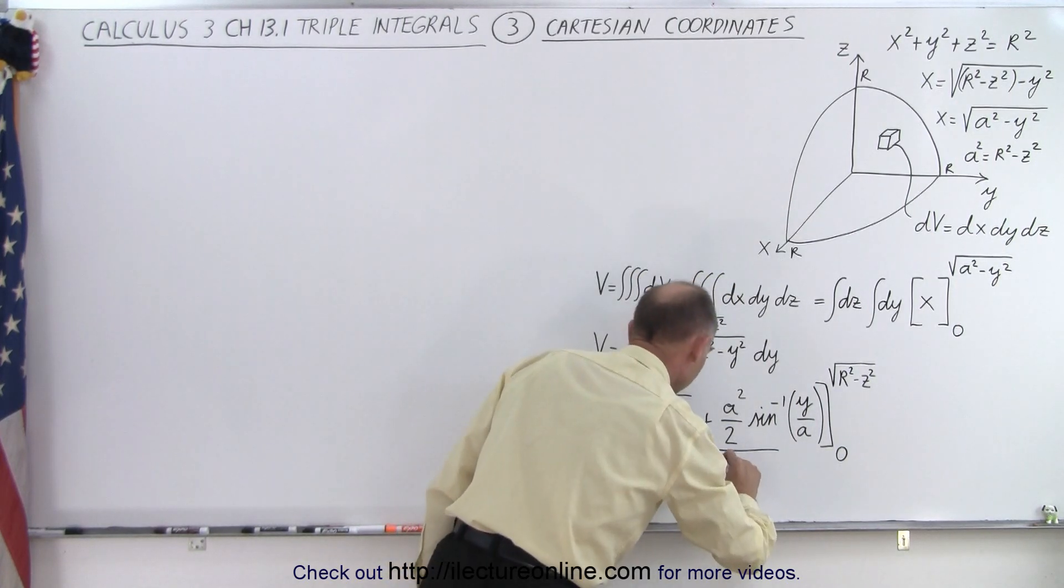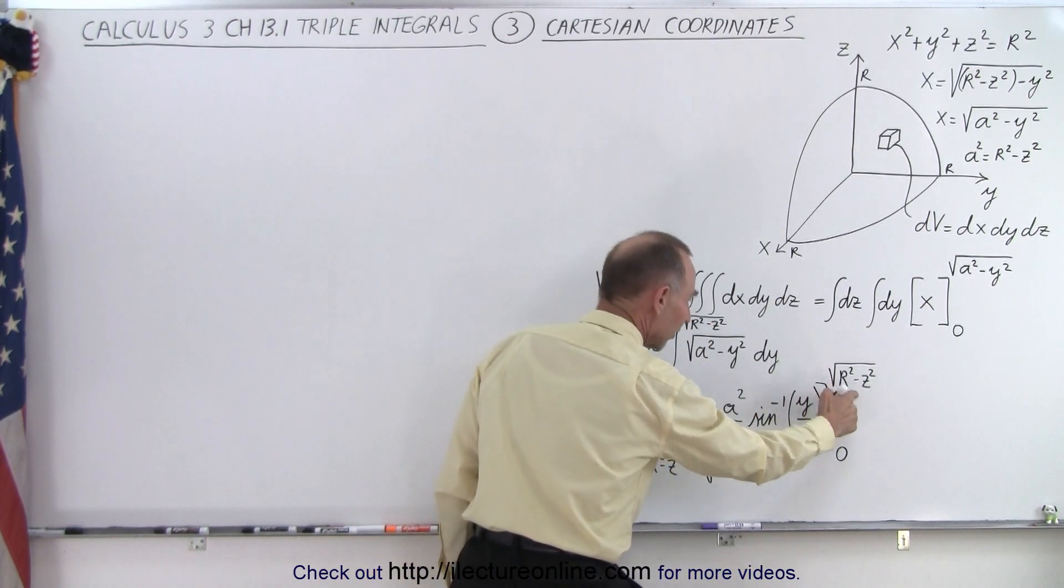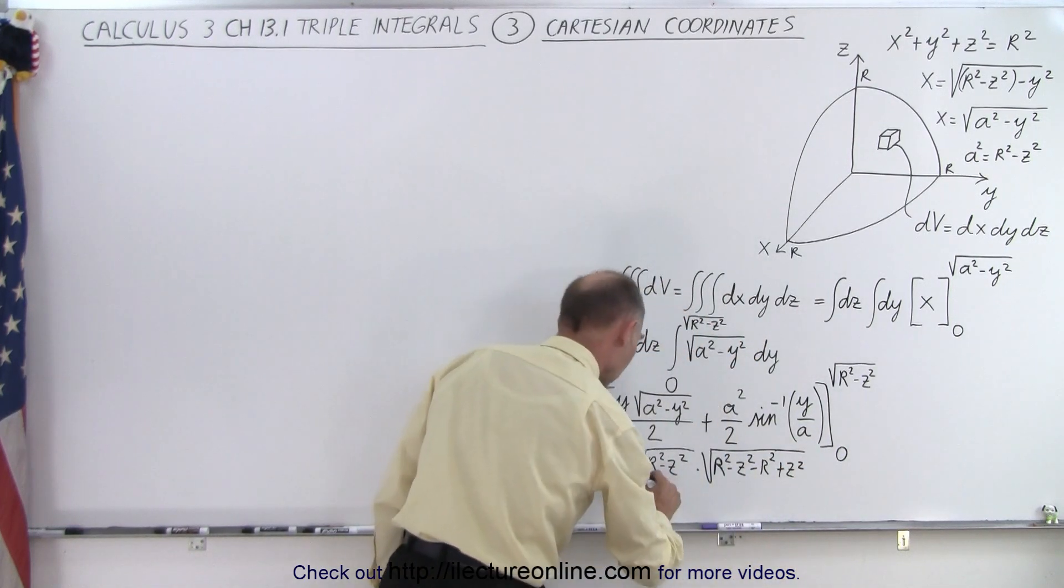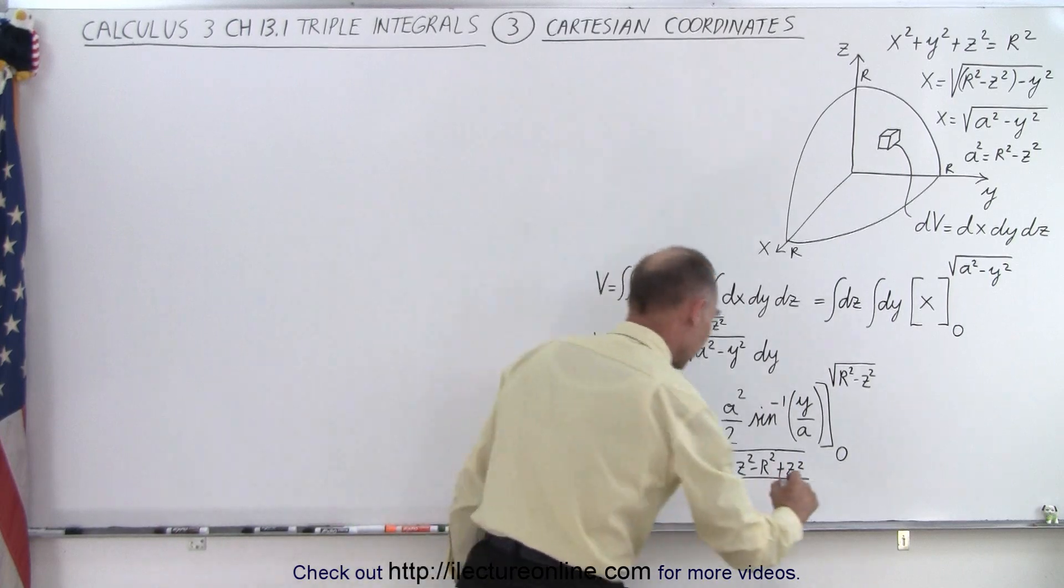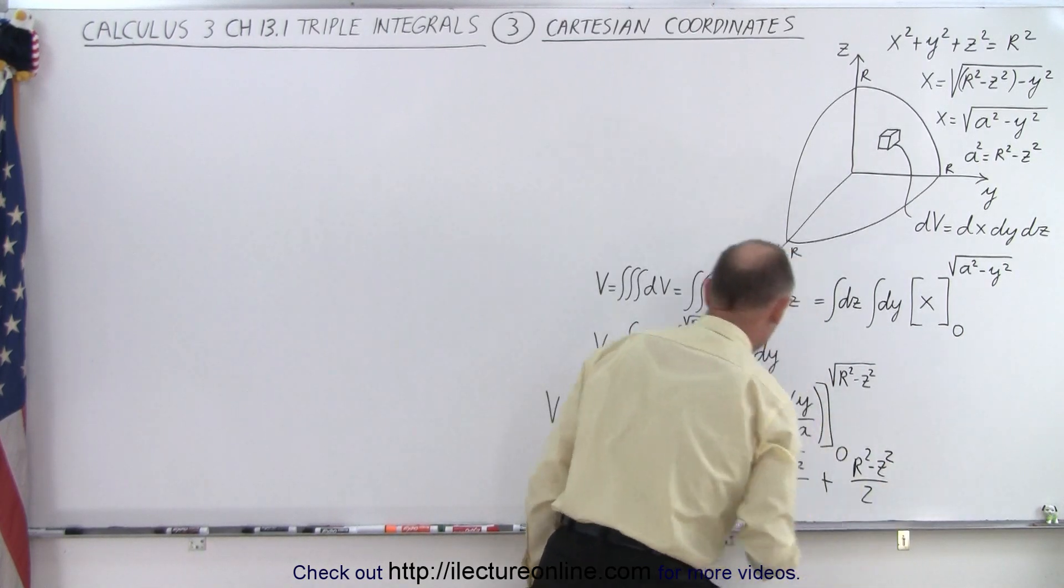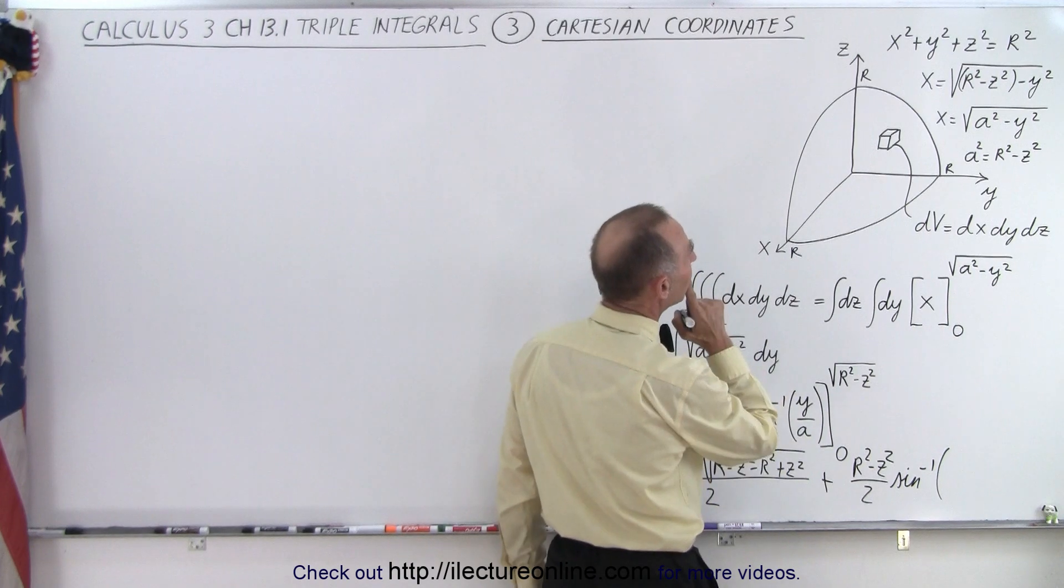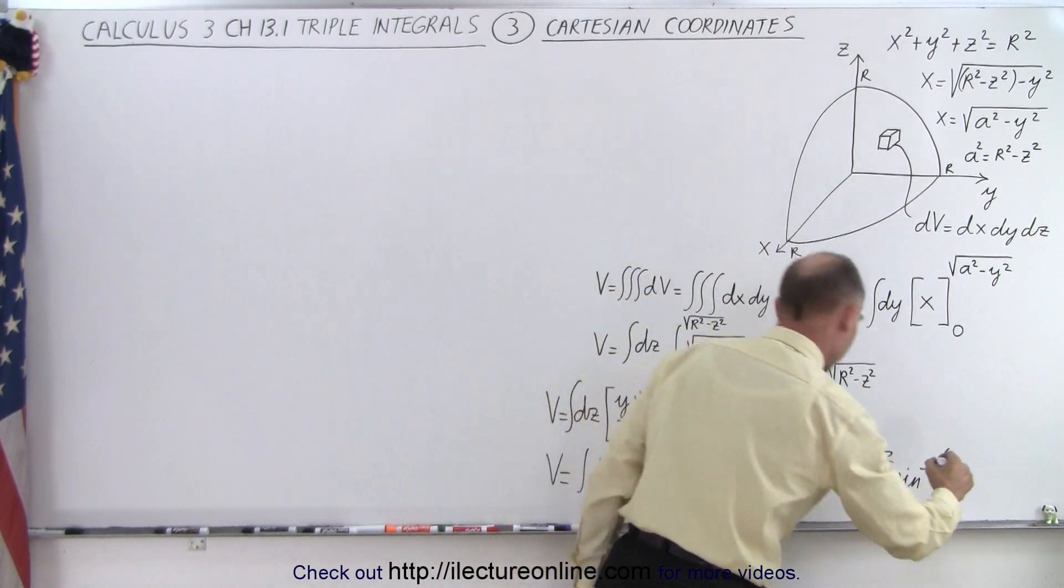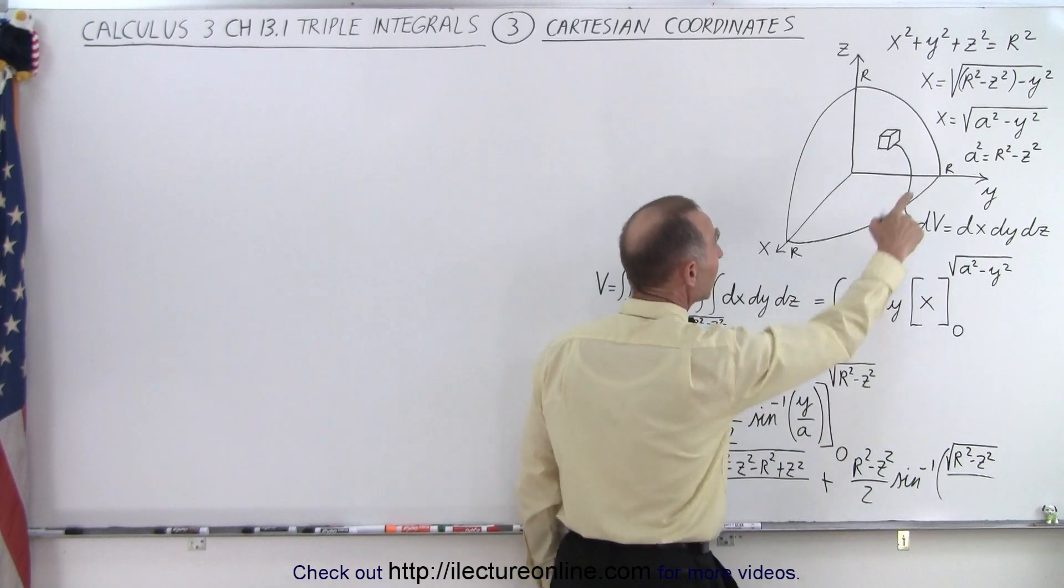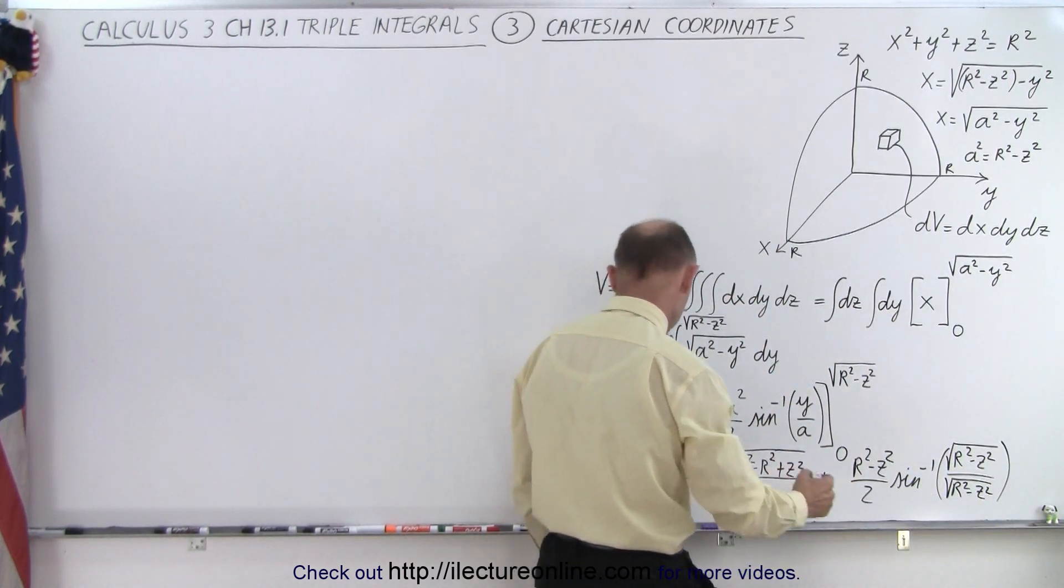Now, a² was r² - z², so we can write that down as r² - z² minus y². So minus this quantity squared, that would be minus r² and minus times minus would be plus z², like this, and the whole thing divided by 2. Then plus a²/2, well a² is r² - z², so we get (r² - z²)/2 times the inverse sine of y/a. Now y, we plug this in here, so we have √(r² - z²) and a will be √(r² - z²).